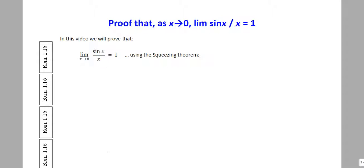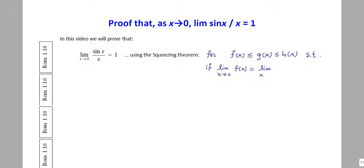We are going to use the squeezing theorem. Very basically, the squeezing theorem says that for an inequality of this sort — f of x is less than or equal to g of x is less than or equal to h of x — if you can show that the limit as x tends to some value c of f of x equals the limit of h of x, both equal to L, then by squeezing g of x between the other two, the limit as x goes to c of g of x is also L.